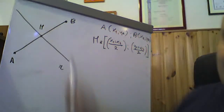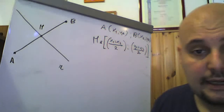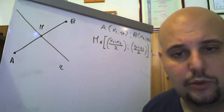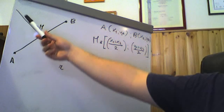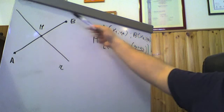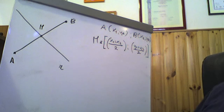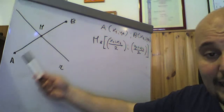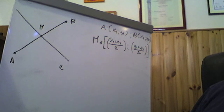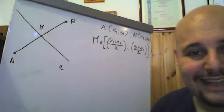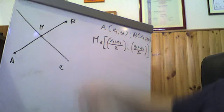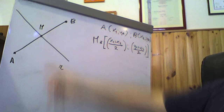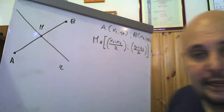In generale si definisce asse di un segmento AB l'insieme dei punti del piano equidistanti da A e da B. In particolare, l'asse di un segmento rappresenta la retta ortogonale al segmento AB passante proprio per il punto medio M fra i punti A e B.